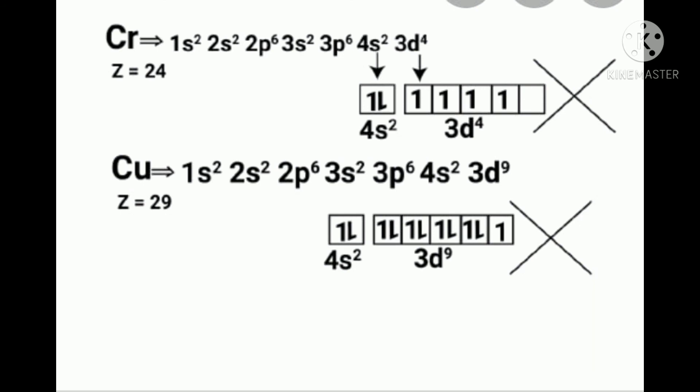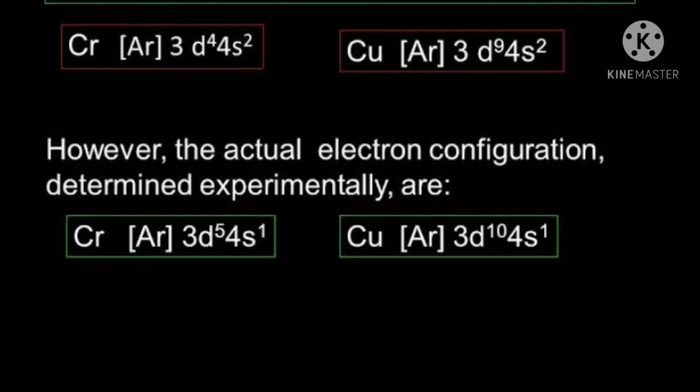We can see this in the ground state electronic configurations of chromium and copper. The atomic number of chromium is 24. The expected configuration would be 1s² 2s² 2p⁶ 3s² 3p⁶ 4s² 3d⁴, but the real configuration is 1s² 2s² 2p⁶ 3s² 3p⁶ 4s¹ 3d⁵. For copper — atomic number 29 — the expected configuration is 1s² 2s² 2p⁶ 3s² 3p⁶ 4s² 3d⁹, but the real configuration is 1s² 2s² 2p⁶ 3s² 3p⁶ 4s¹ 3d¹⁰, because d⁵ and d¹⁰ configurations are extra stable.